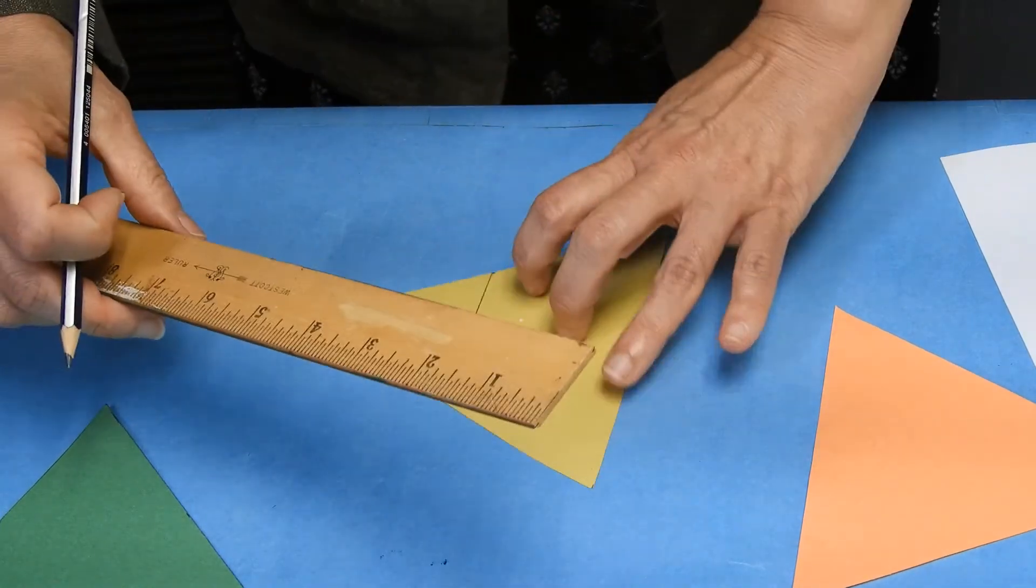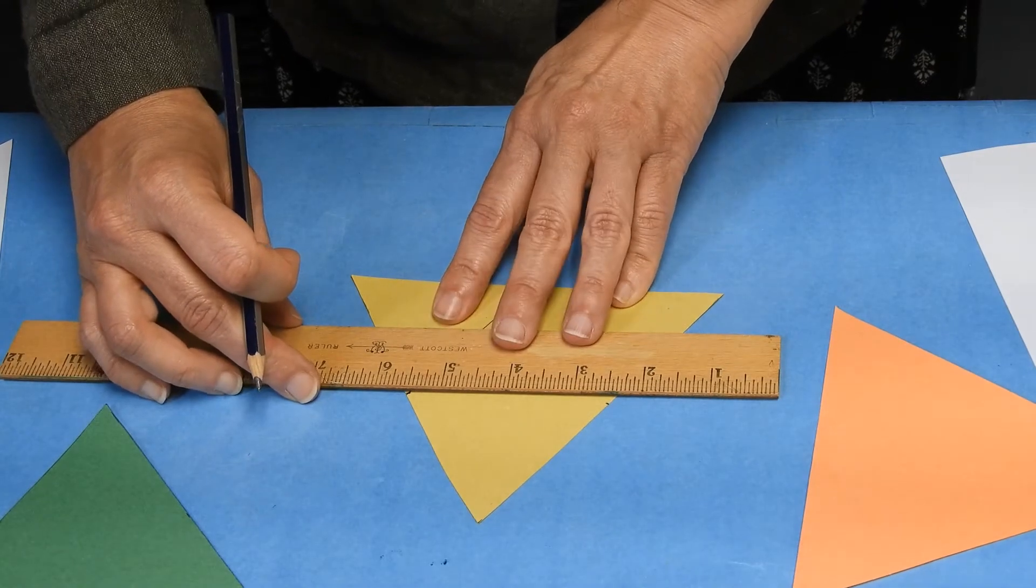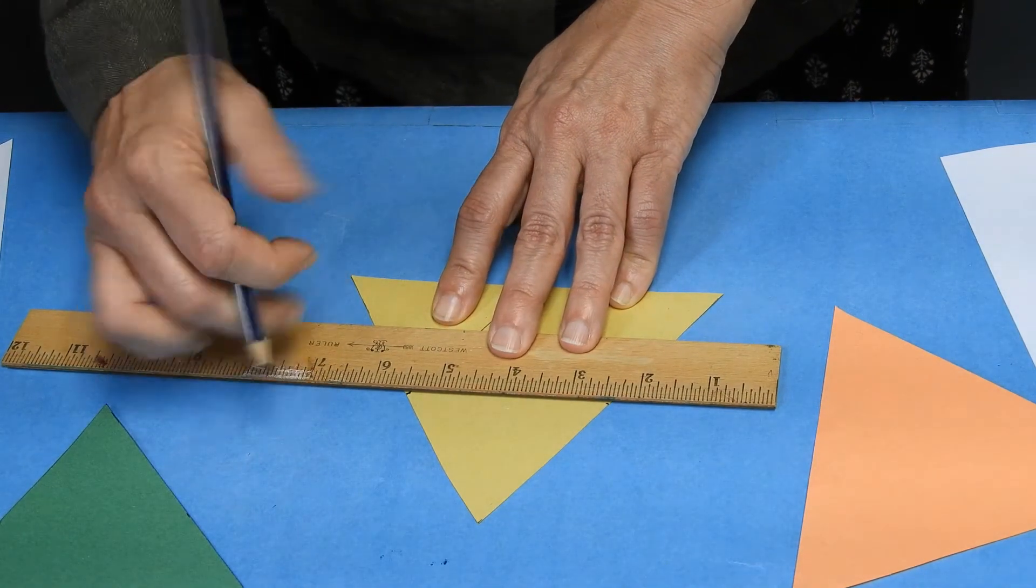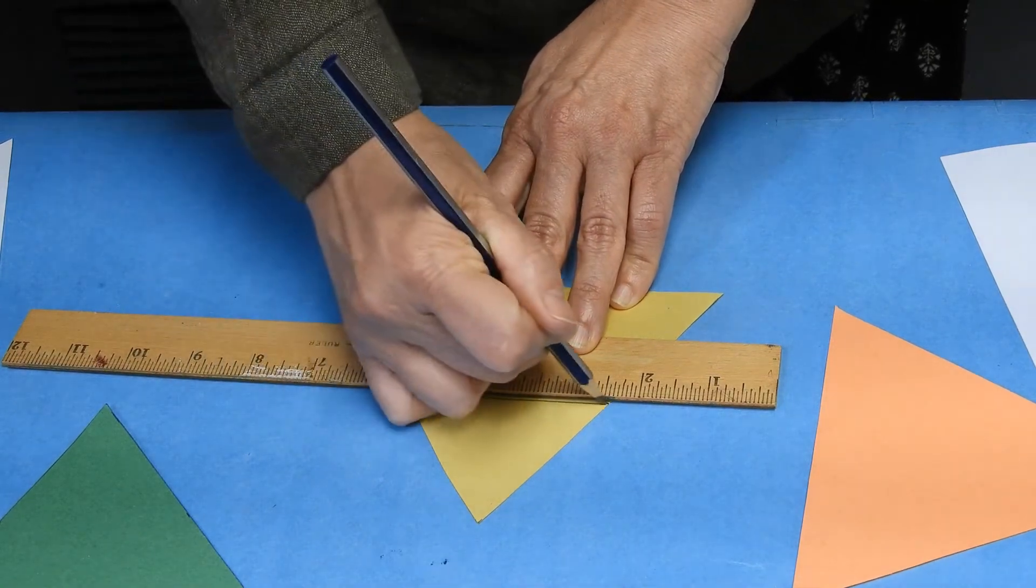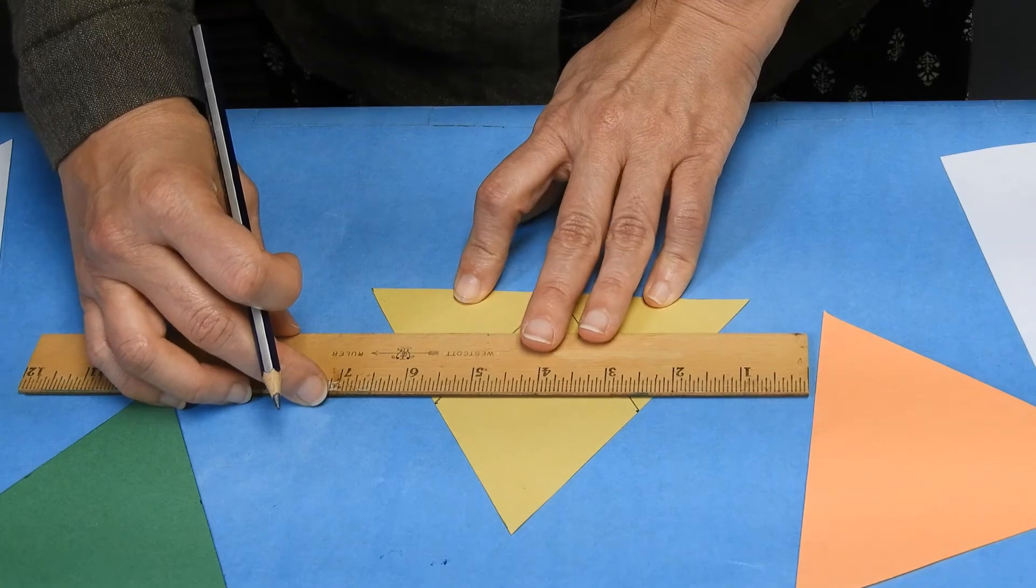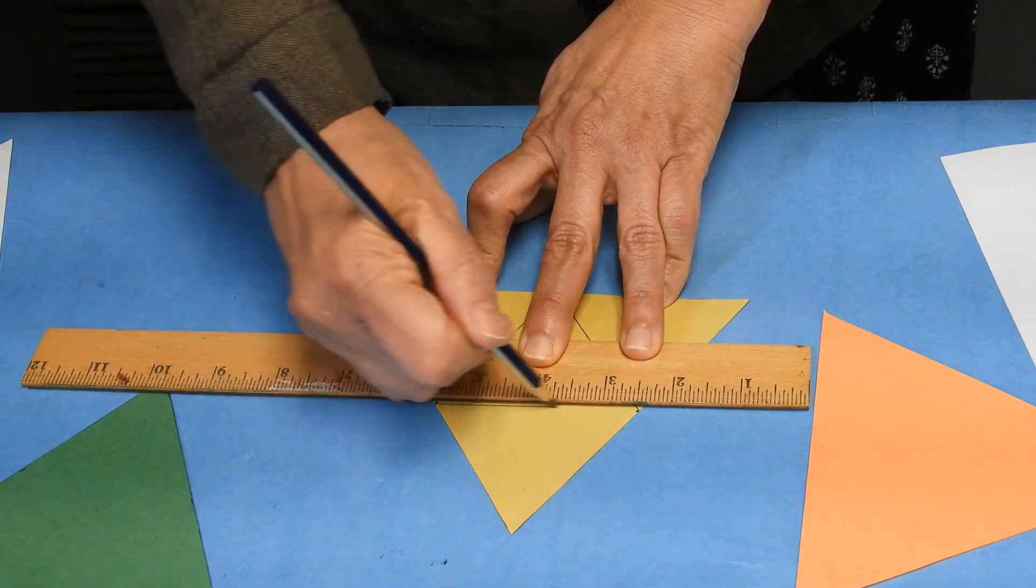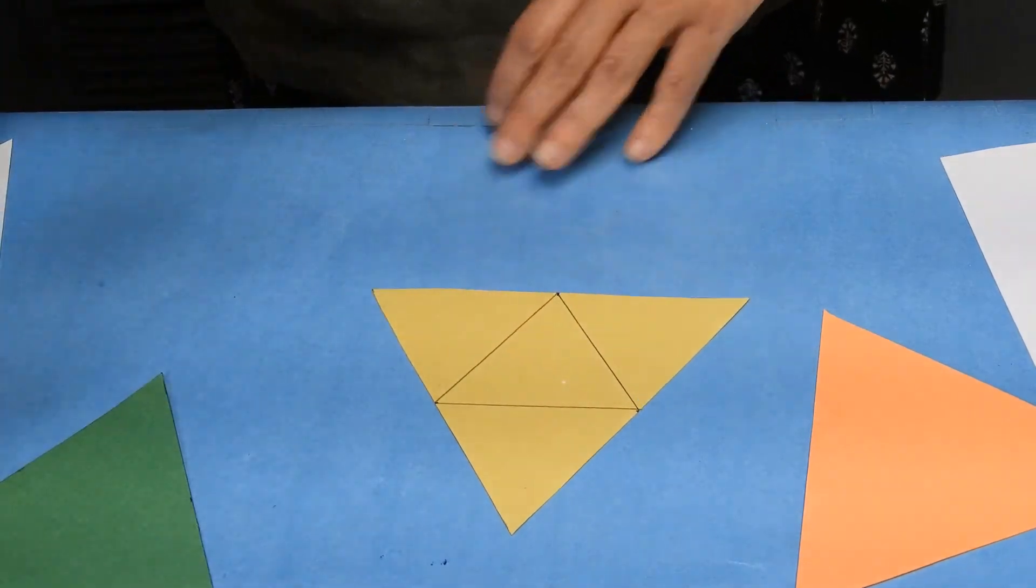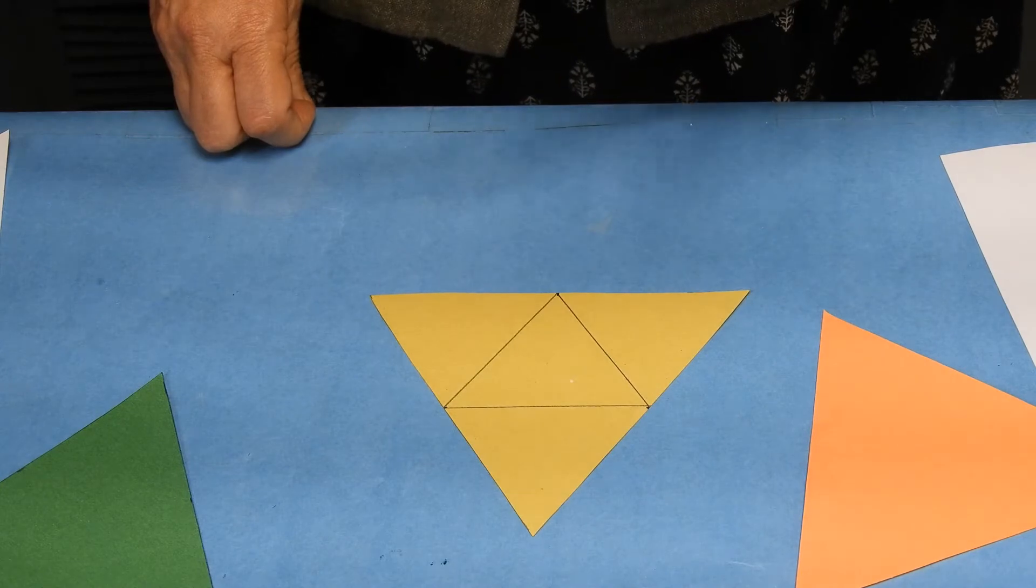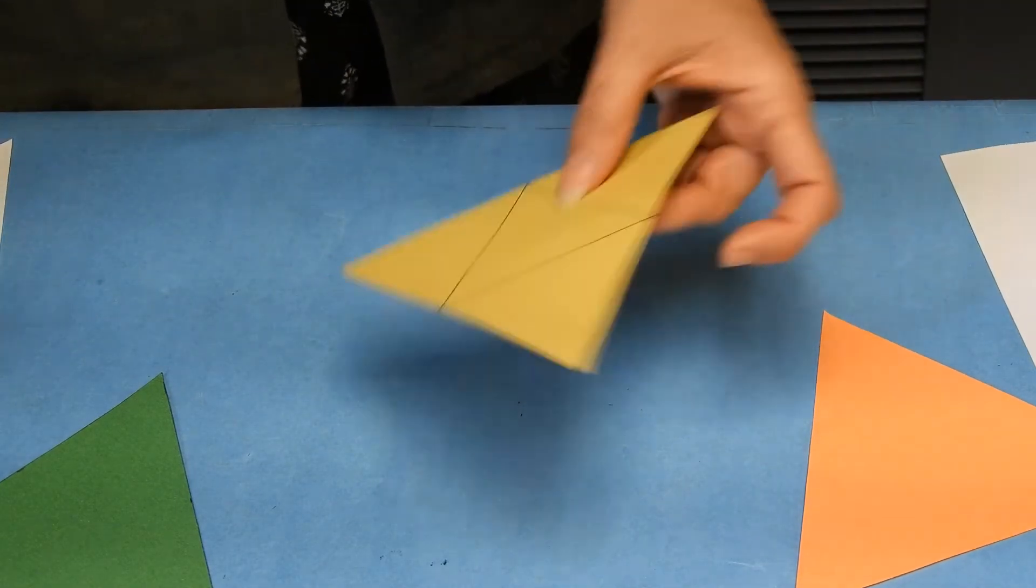And then I just turn my triangle and I find the midpoint and I connect it to the other midpoint. And then I turn my triangle again and I match midpoint to midpoint. And what you'll see is I have divided my equilateral triangle into four equilateral triangles. So I'm going to cut them.